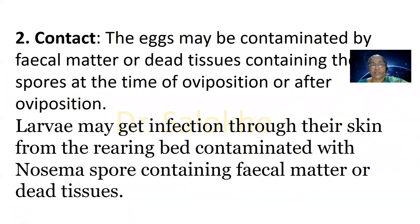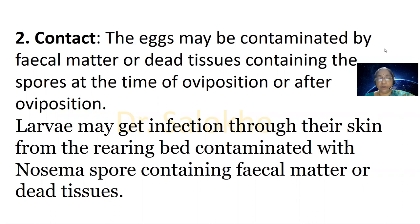The second route is contact. The eggs may be contaminated by fecal matter or dead tissues containing the spores at the time of oviposition or egg laying, or after oviposition. Larvae may get infected through their skin from the rearing bed contaminated with Nosema spores containing fecal matter or dead tissue.